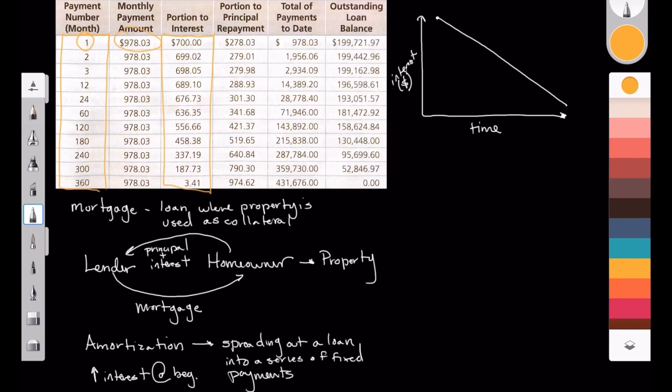Out of our $978 payment, the first month, $700 is going to the mortgage or to interest. But by our last payment, only $3.41 is going to interest. And so we pay for the interest on the front end versus the back end of the loan.